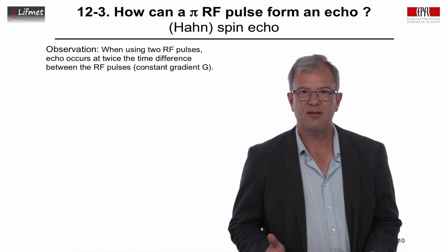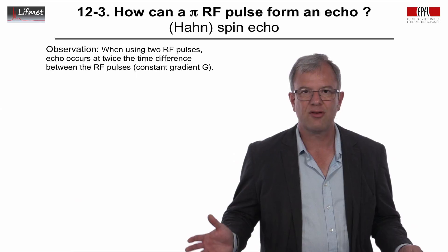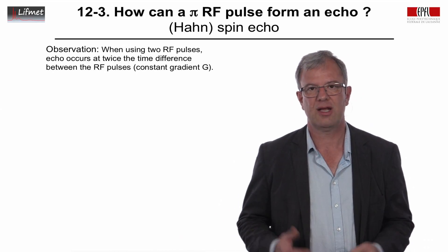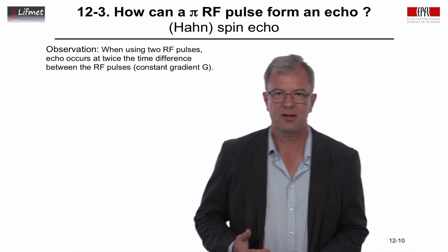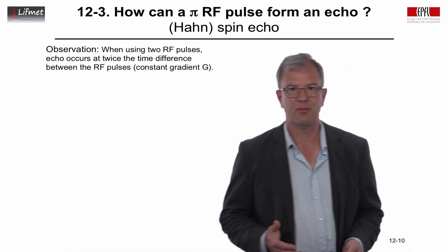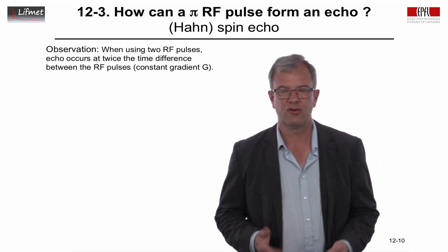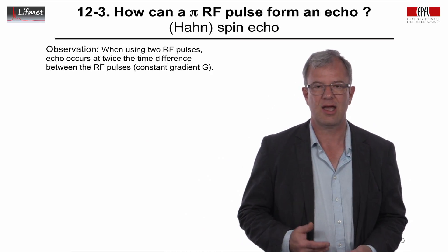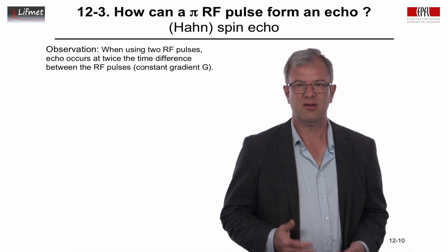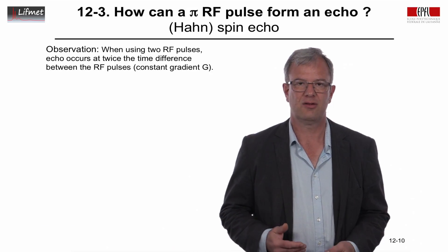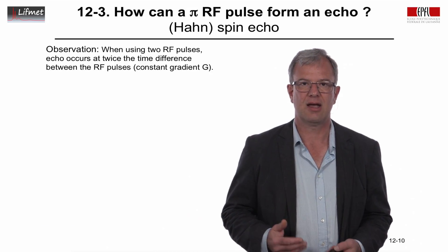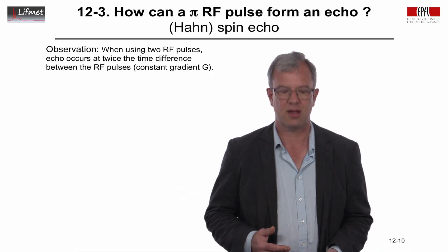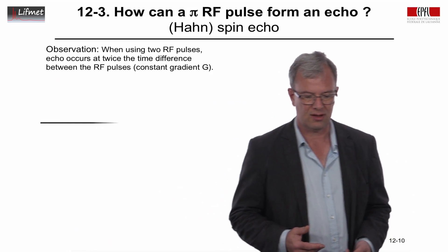You might ask — in the 1950s they did not have gradients, how come this was observed? Well, actually at the time, the quality of the magnets was so poor that B0 was really not static, not constant, not homogeneous — so there was a big gradient inside the magnet.